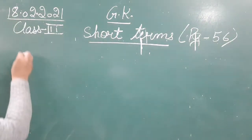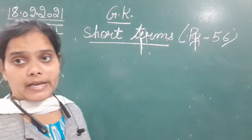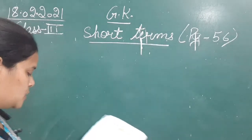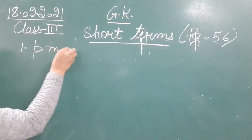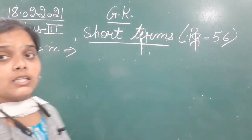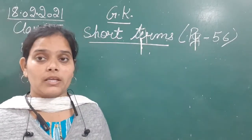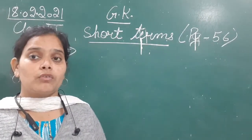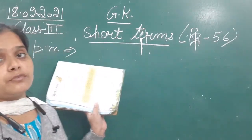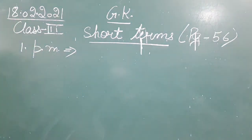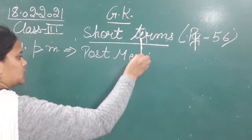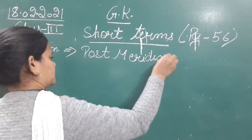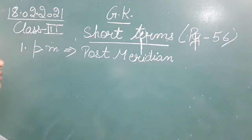Now let's move to part B of the chapter: can you write the full forms of these acronyms? In part B there are also some common acronyms we use in daily life. The first is PM. We use PM while writing time. The full form of PM is 'Post Meridiem'.